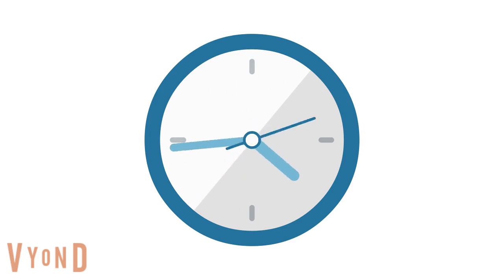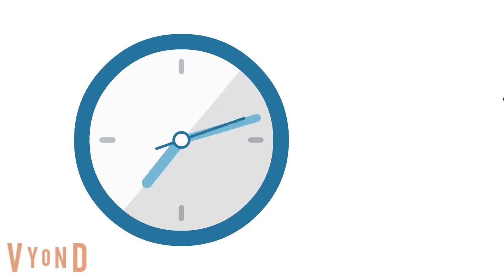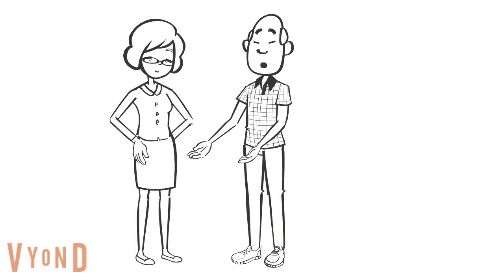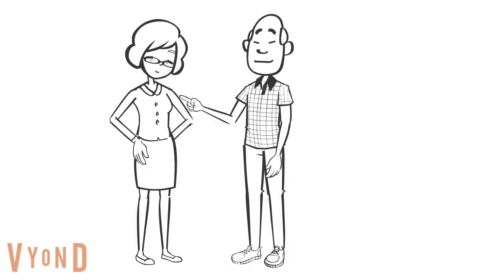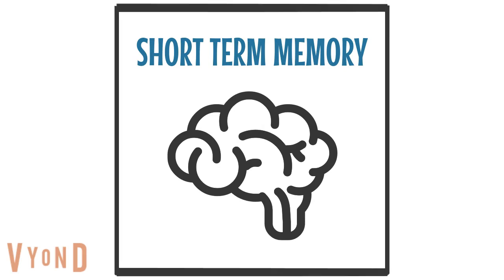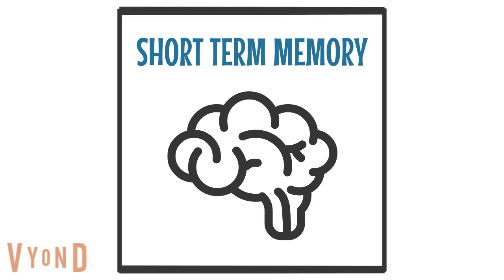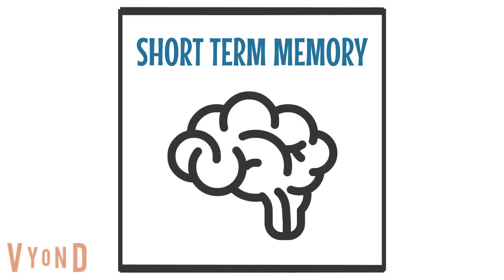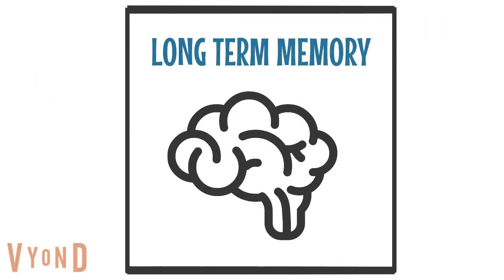Short-term memory is what it says on the tin. This is where recent information is processed and stored. This is where you store a phone number right before you dial it, or how you remember the conversation you're currently having. Short-term memory can only store information for a brief period of time, so again the memory will either decay or move to the next store, which is long-term memory.